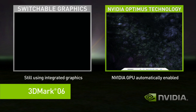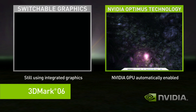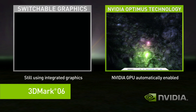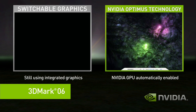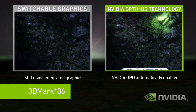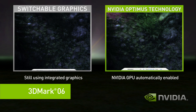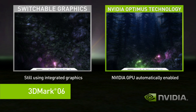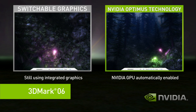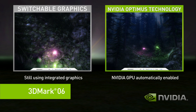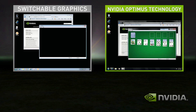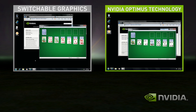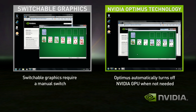Optimus, on the right-hand side, when it starts a complex application, it automatically uses the discrete GPU. The performance difference between the two is easy to see. Even better with Optimus, when you go back to your basic applications, the discrete GPU automatically turns itself off and you get great battery life.